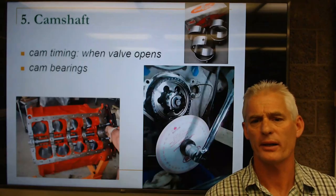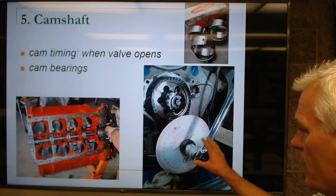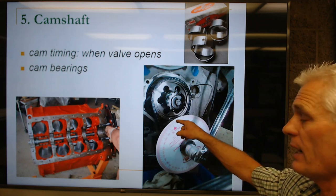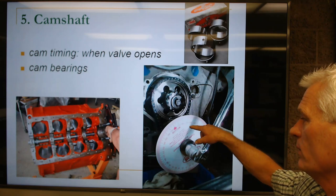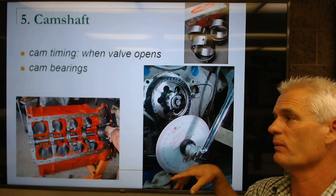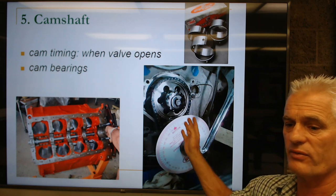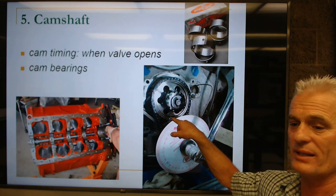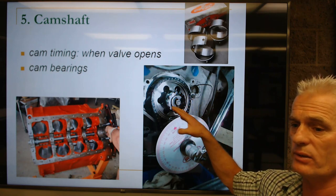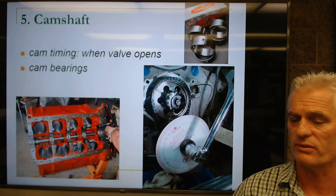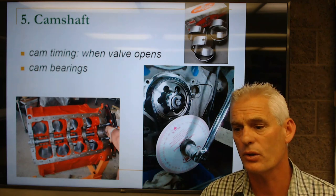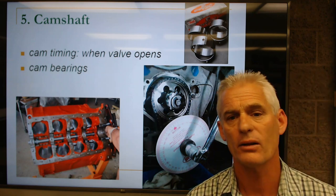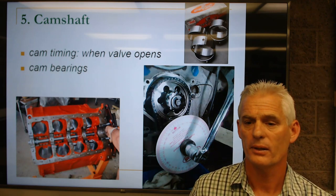Cam timing is when the valves open. Old school, we could put a degree wheel on the camshaft and line the marks up. We could actually change it two or four degrees advanced — advancing cam timing typically builds torque and reduces horsepower. But nobody does this anymore because all modern cars have variable valve timing, meaning as you accelerate, they actually change the relationship of the camshaft to the crankshaft. This helps torque and fuel economy.